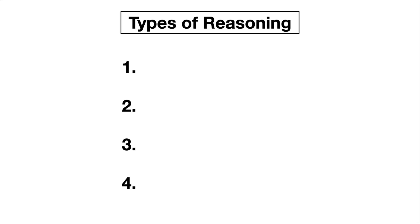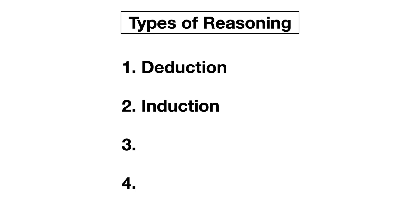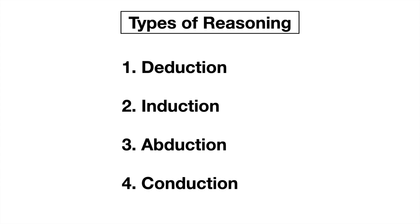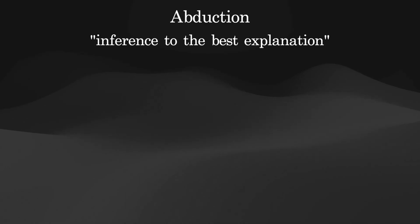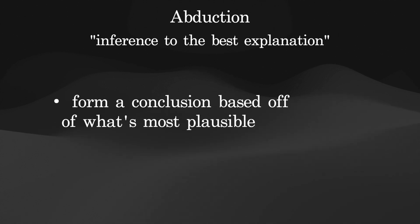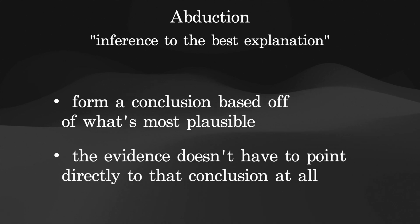Before, I said that there are four types of reasoning, and I only talked about deduction and induction. So what are the other two types? They're abductive reasoning and conductive reasoning. Abductive reasoning is also called inference to the best explanation, which should tell you what it's all about. It's forming a conclusion based off of what's most plausible given the evidence, and that evidence doesn't necessarily even have to point directly to that conclusion at all.